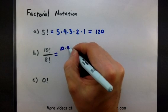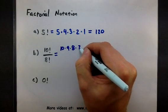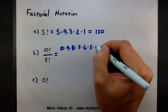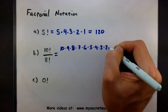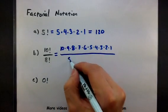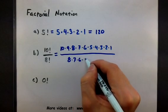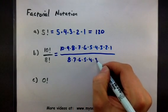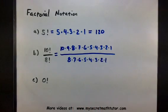So 10 times 9 times 8 times 7 times 6 times 5 times 4 times 3 times 2 times 1. Looks good. And then write out what the bottom is. There we go.